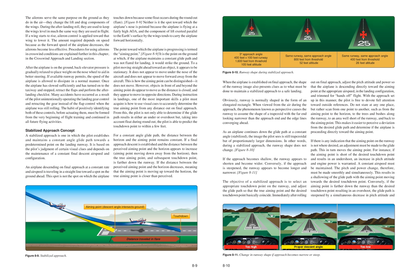The objective of a stabilized approach is to select an appropriate touchdown point on the runway and adjust the glide path so that the true aiming point and the desired touchdown point basically coincide. Immediately after rolling onto final approach, adjust the pitch attitude and power so that the airplane is descending directly toward the aiming point at the appropriate airspeed, in the landing configuration, and trimmed for hands-off flight. Do not stare at any one place, but rather scan from one point to another — such as from the aiming point to the horizon, to the trees and bushes along the runway, to an area well short of the runway, and back to the aiming point.